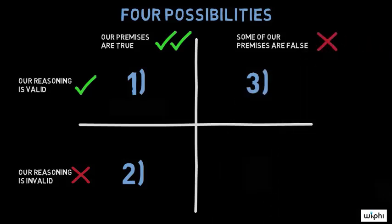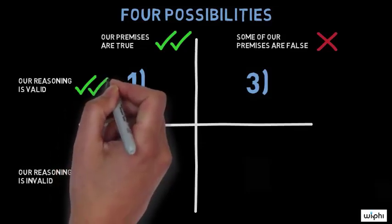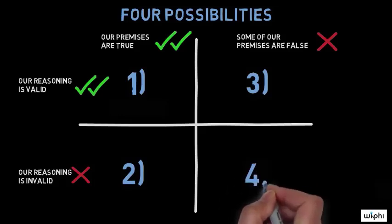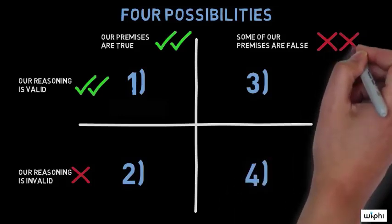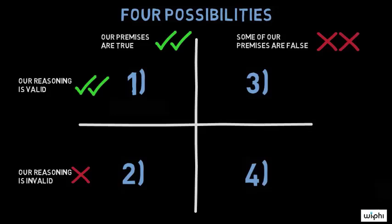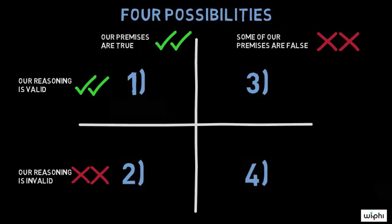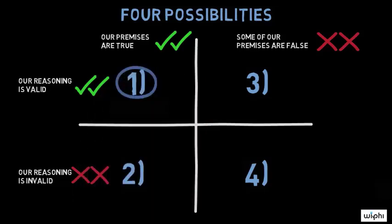Possibility three: we may have our facts wrong — some of our premises are false — and we may use them properly, so our reasoning is valid. Possibility four: we may have our facts wrong and use them improperly, so our reasoning is invalid. When we are evaluating an argument, we should only accept its conclusions if the first possibility obtains.